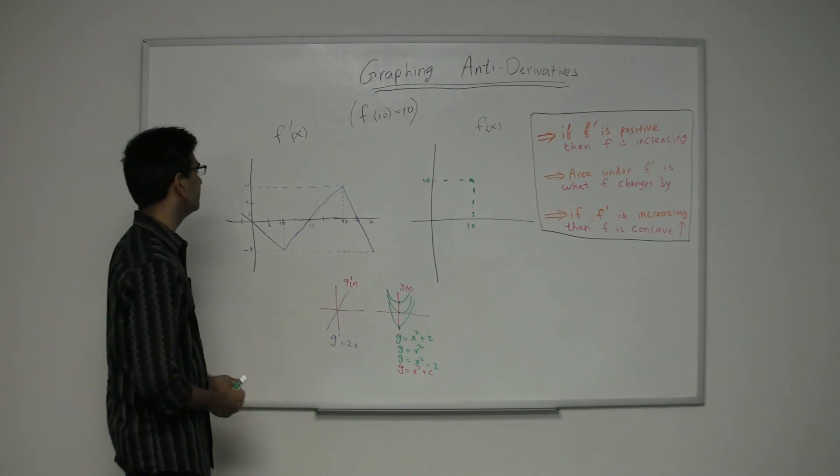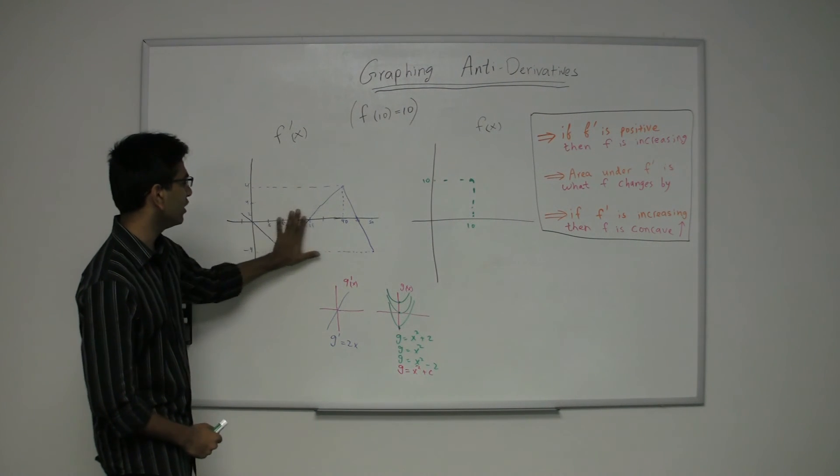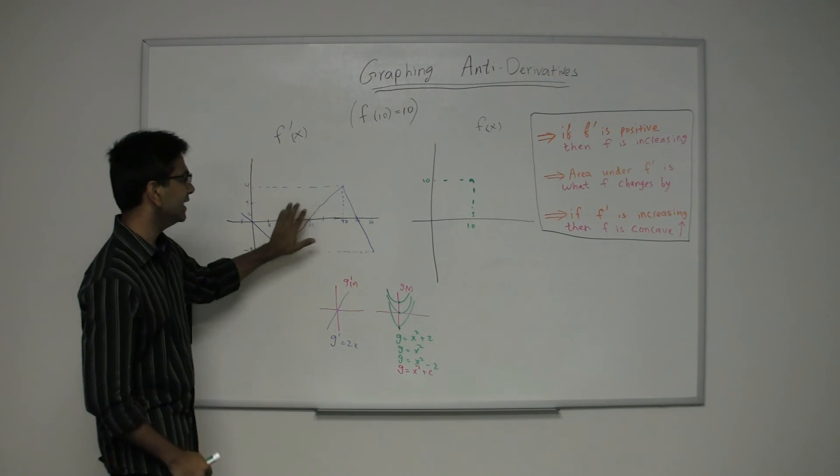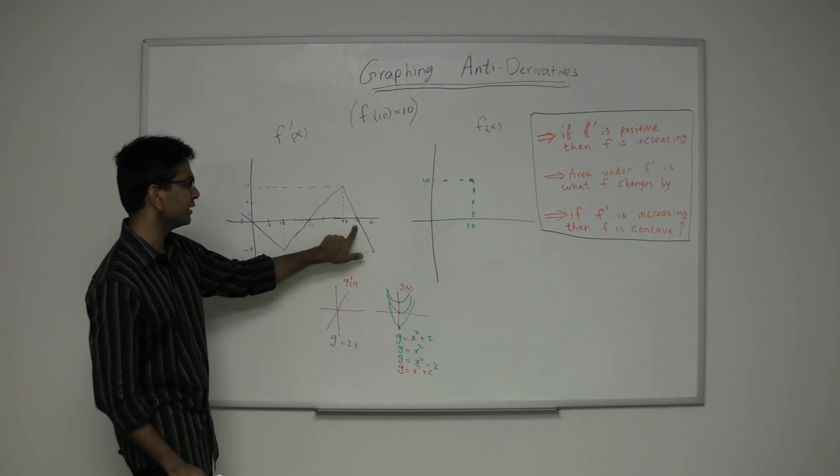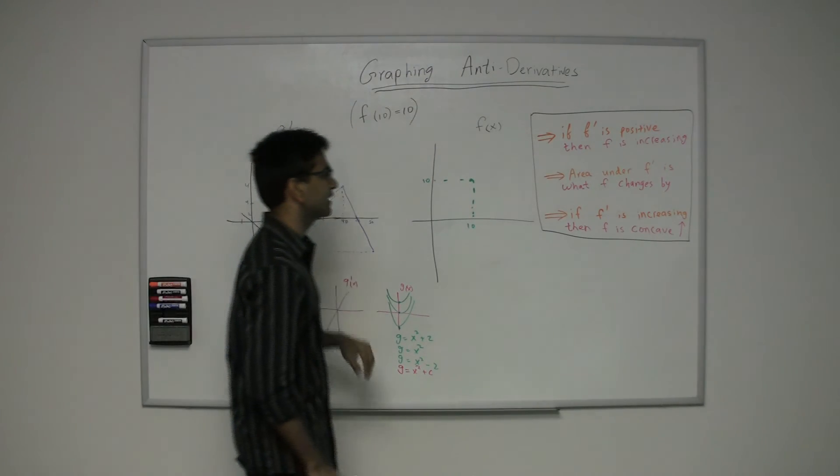We know that f is going to be increasing over here, decreasing all the way over here until 25, increasing all the way over here until 45, and then decreasing here until 50, just because f prime is positive or negative.